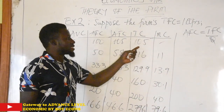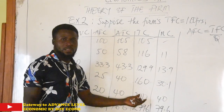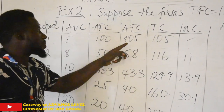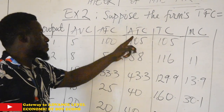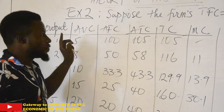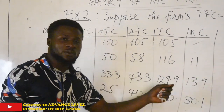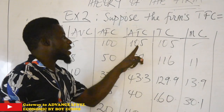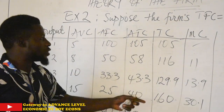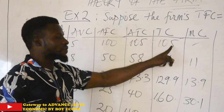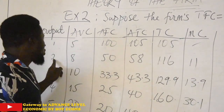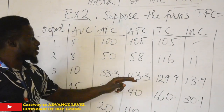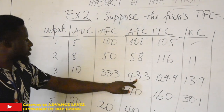So we are going to multiply the values of average total cost by our output to get total cost. Total cost is gotten by multiplying average total cost by output. If you do not have total variable cost and total fixed cost to sum together, you can get total cost this way. So: 1 × 105 = 105; 2 × 58 = 116; 3 × 43.3 = 129.9.